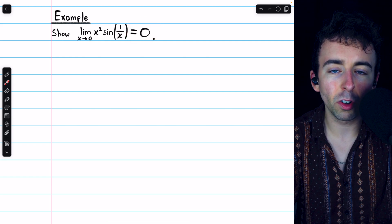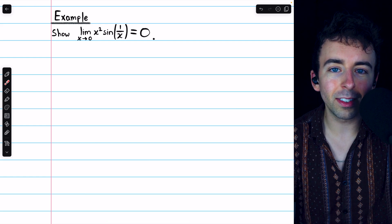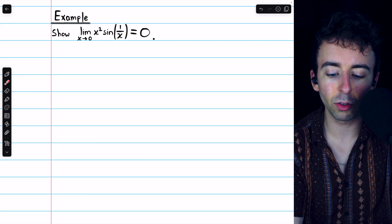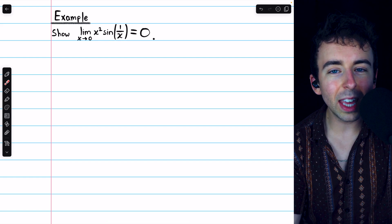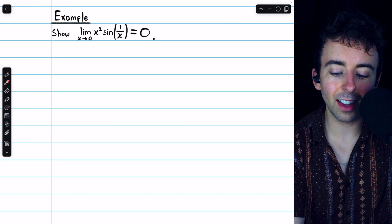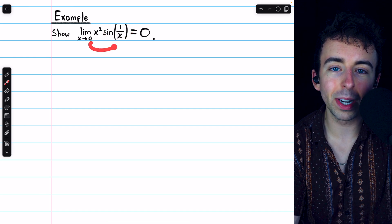This is a typical situation where the squeeze theorem can be useful. For starters, notice that we can't split up this limit of a product, right, x² times the sine function? We can't split that up into the product of the limits, because this guy's causing an issue. sin(1/x), we can't plug 0 into that.